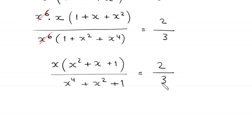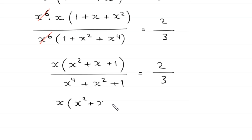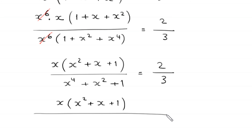We are left with x times (x squared plus x plus 1) in the numerator. Now we want to write the denominator expression as a perfect square.